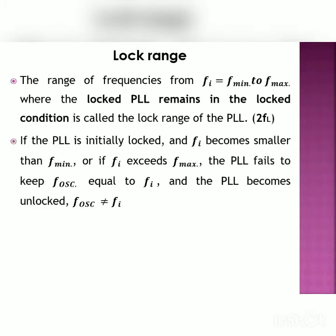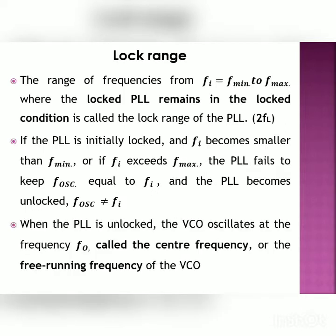If the PLL is initially locked and Fi becomes smaller than F minimum or exceeds F maximum, the PLL will no longer be able to maintain the lock condition and becomes unlocked — that is, the VCO output frequency F oscillator is not equal to the input frequency. When unlocked, the VCO will oscillate at frequency FO, called the center frequency or free running frequency of the VCO.